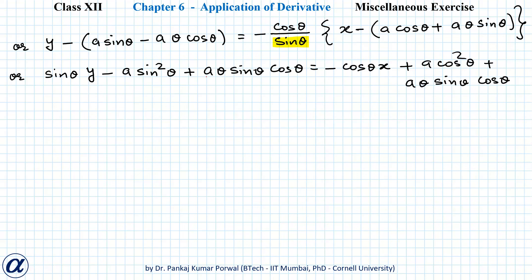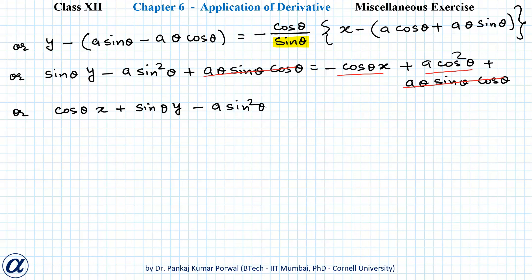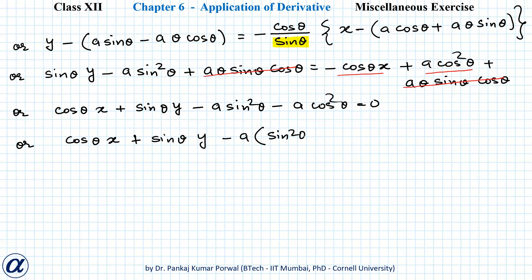Cancelling the aθ sinθ cosθ terms and rearranging, we bring −cosθ · x and the sin terms together: cosθ · x + sinθ · y minus a times (sin²θ + cos²θ) equals 0. Since sin²θ + cos²θ = 1, this simplifies to cosθ · x + sinθ · y − a = 0.